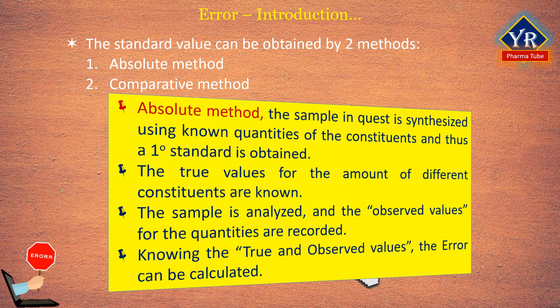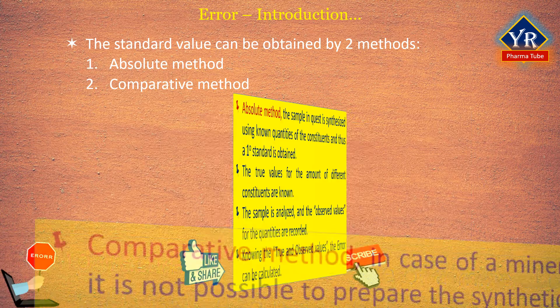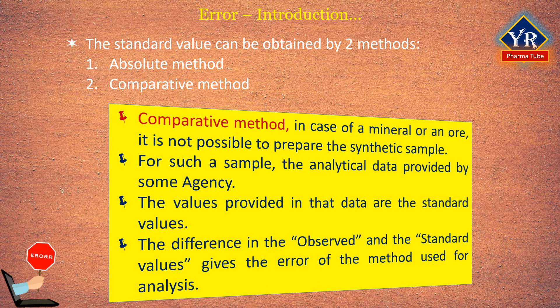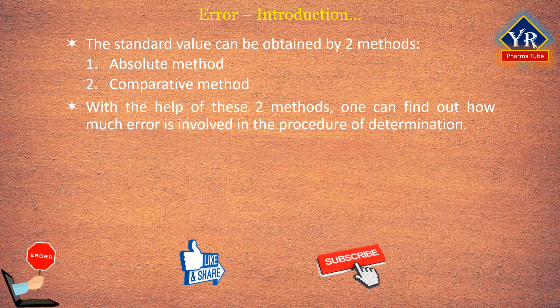In the absolute method, the sample is synthesized using known quantities of the constituents, thus a primary standard is obtained and the true values for the constituents are known. The sample is then analyzed and the observed values are recorded; knowing both, the error of the method can be calculated. In the comparative method, as in the case of a mineral or ore, it is not possible to prepare a synthetic sample, so analytical data from a standard agency is used. The difference between the observed and the standard value gives the error of the method.